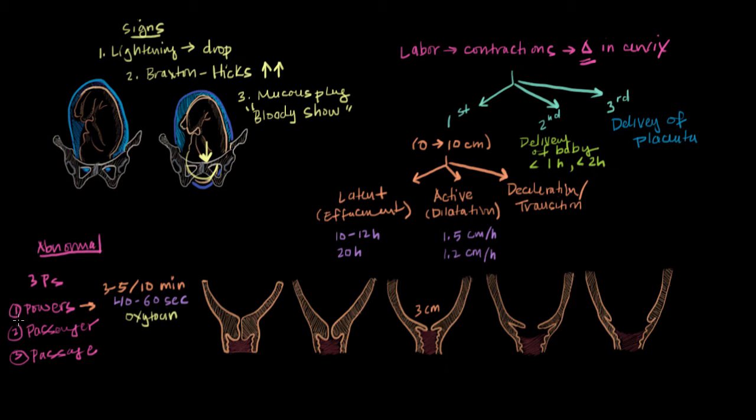Okay, so if powers isn't the problem, then we need to consider the second P, passenger, which the passenger is, of course, the fetus. So some things to consider about the fetus include what its orientation is. So whether the head, the feet, or the shoulders are delivering first, right, because that can affect things. We have to consider whether the head is flexed or whether it's extended. And of course, how big the fetus's head is is also important to think about if you're having any abnormality in labor.